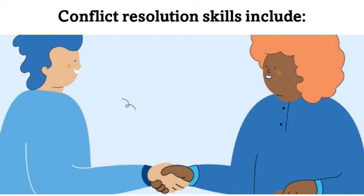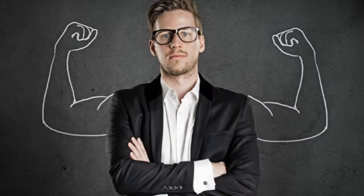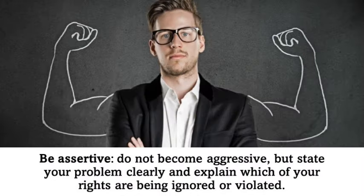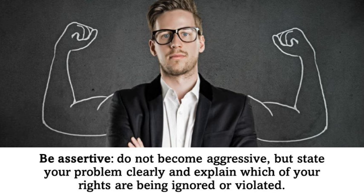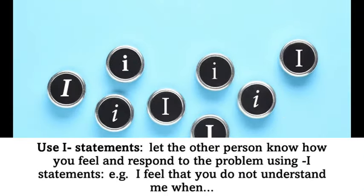What does conflict resolution include? It includes being assertive — meaning that you do not become aggressive, but state your problem clearly and explain which of your rights are being ignored or violated. Second, it's using I statements: letting the other person know how you feel using I statements. For example, 'I feel that you do not understand me when I...' and then you state the problem that resulted in the conflict.